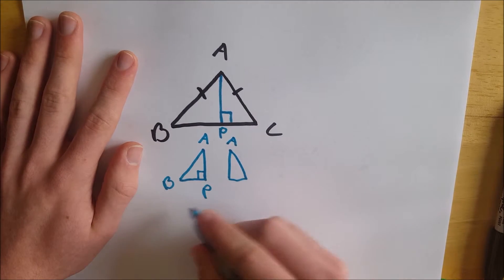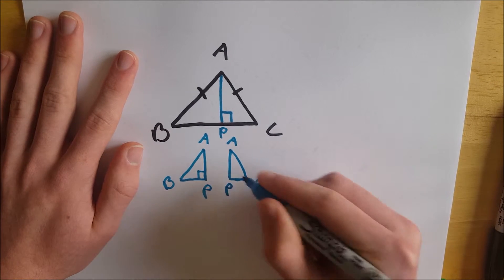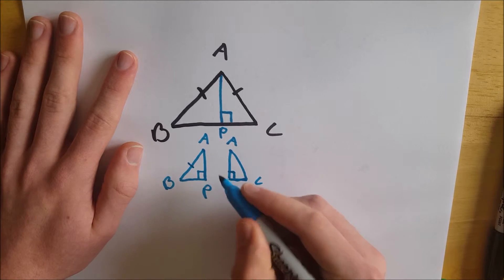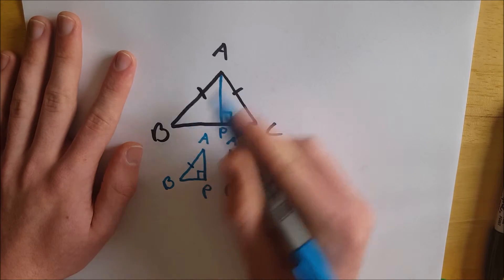And why is that? Well we know that this side is congruent to this side because it's an isosceles triangle, that's how we drew it. AB is congruent to AC.